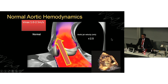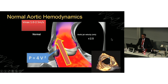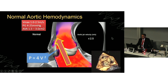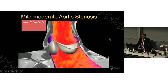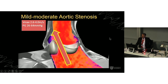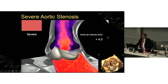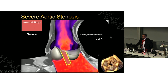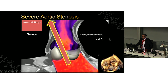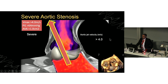Normal individuals have a velocity between 1 and 2.5 metres per second, giving a peak gradient of 4 to 25 mmHg, and a calculated valve area of 1.5 to 3 square centimetres. The mild to moderate range is 2.6 to 4 metres per second, 26 to 64 mmHg, and valve areas above 1 and below 1.5 cm². Severe stenosis — which ends up in TAVI — is a Vmax more than 4 m/s, peak gradient more than 64 mmHg, and a valve area less than 1 cm².